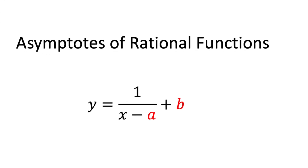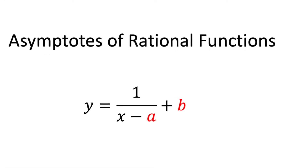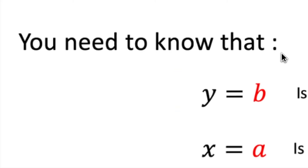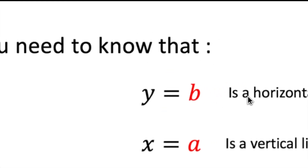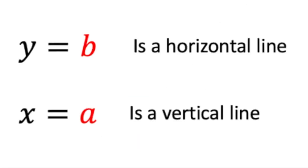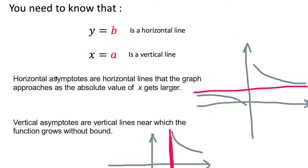Hello, this is a video on asymptotes of rational functions. In this video we look at a general demonstration on the effect of changing the values of a and b in this equation. You need to know that y equals a constant is an equation of a horizontal line, and x equals a constant is an equation of a vertical line.